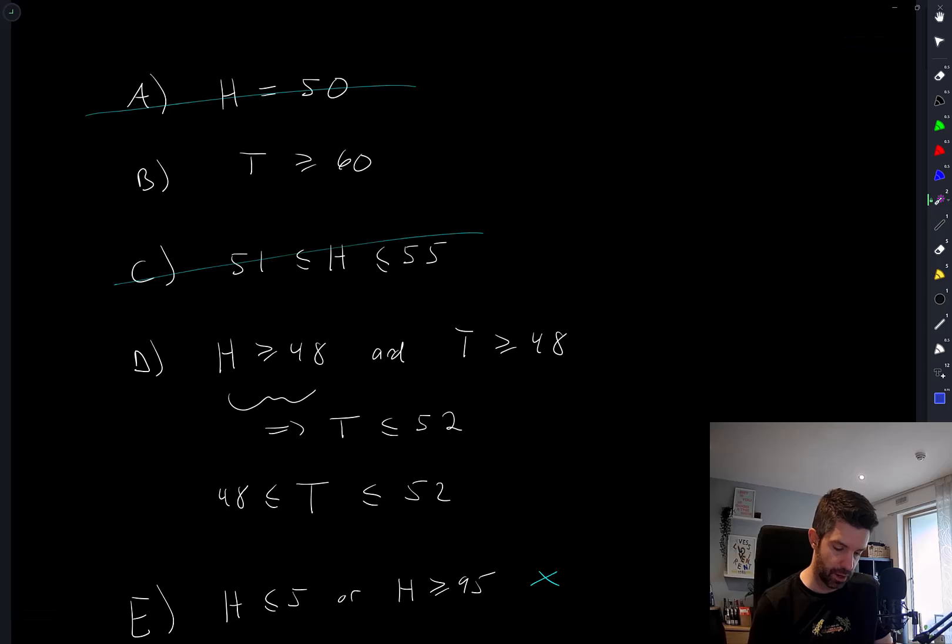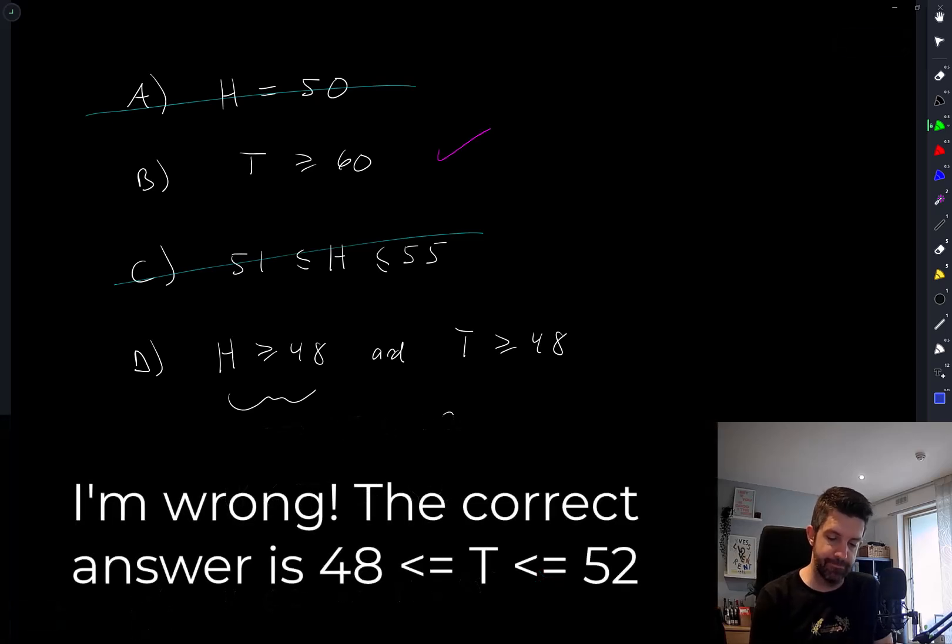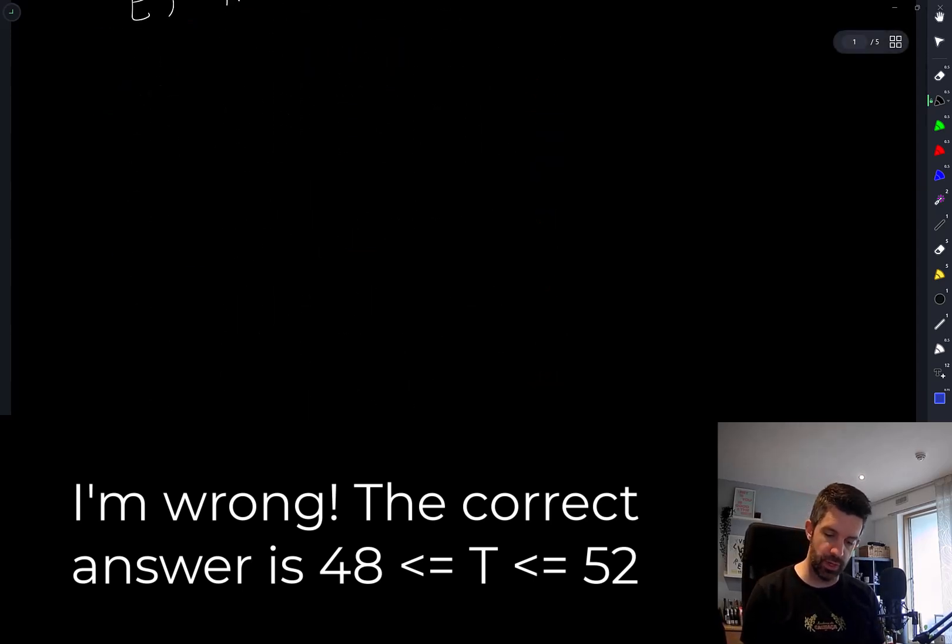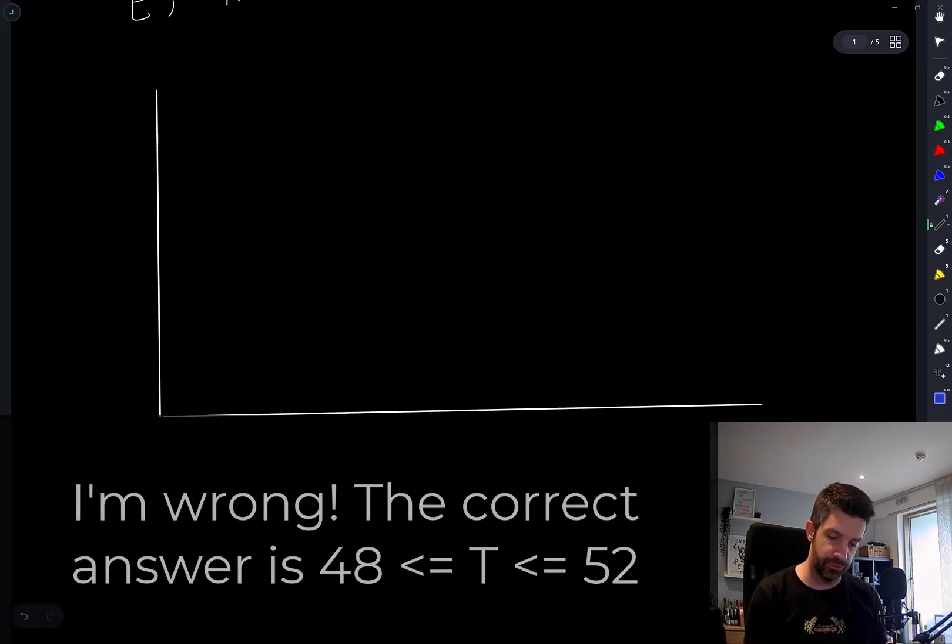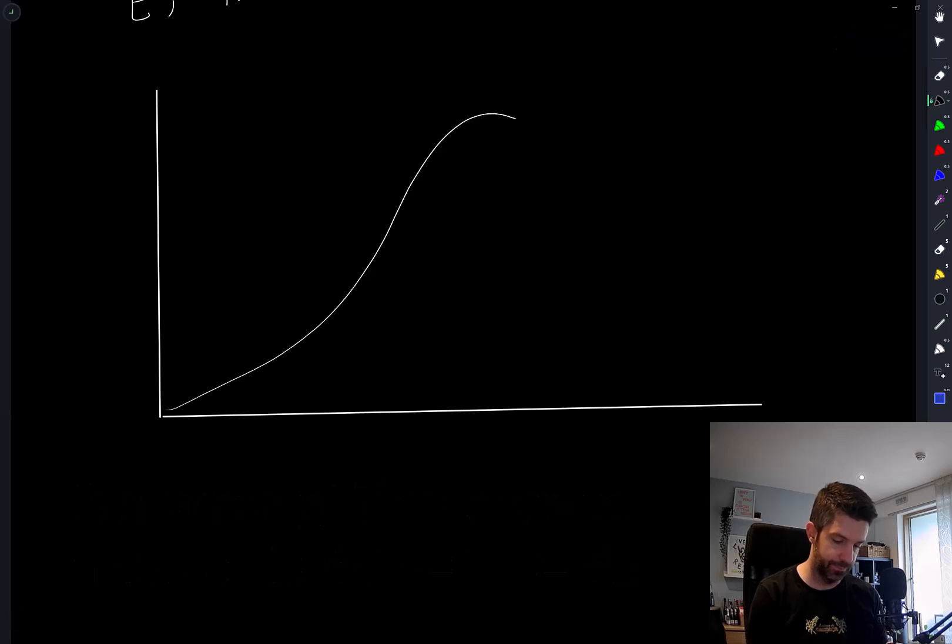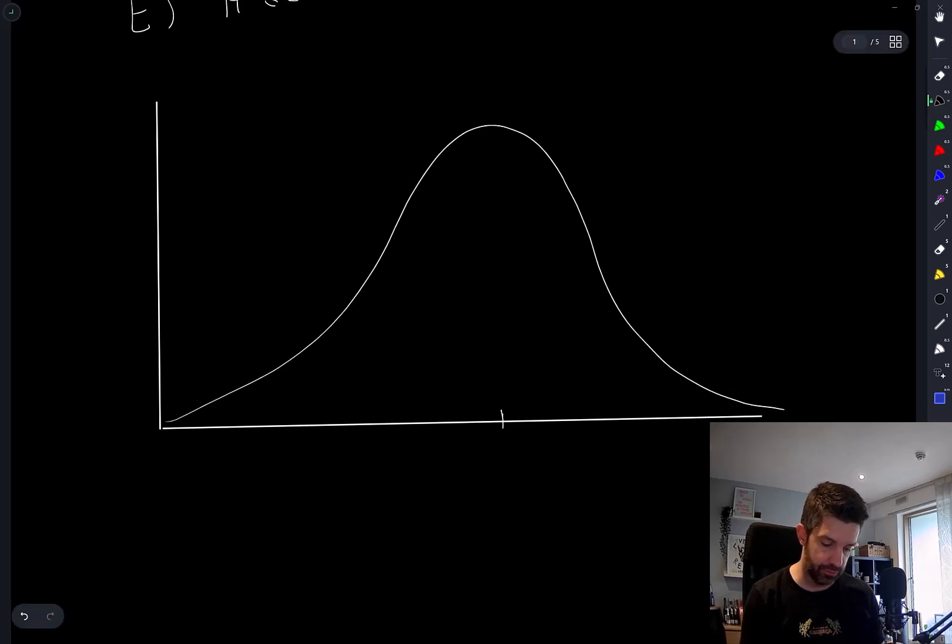So I just need to try and argue with myself which of these outcomes is correct. T between 48 and 52 or T greater than or equal to 60. I think it's going to be this one. If I draw a bell curve, which is approximately what the distribution of this thing looks like, it's not exactly, I guess we could write down exactly what it is. And the peak is at 50.